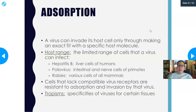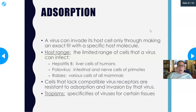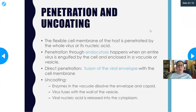Polio infects intestinal and nerve cells of primates and can cross different species. Rabies infects various cells of all mammals — dogs, cats, humans, raccoons — entering neural and other cells through saliva. Cells that lack compatible virus receptors are resistant to absorption and invasion by that virus. The term 'tropism' refers to the specificity of viruses for certain tissues.